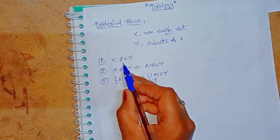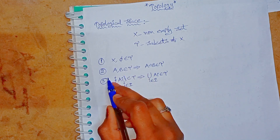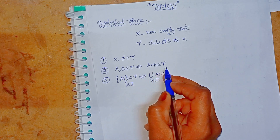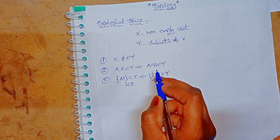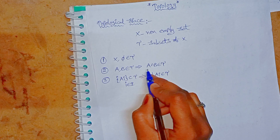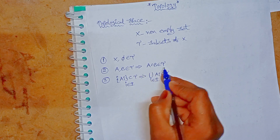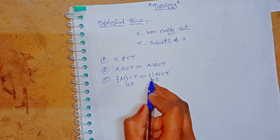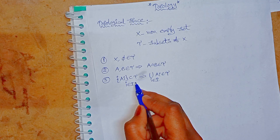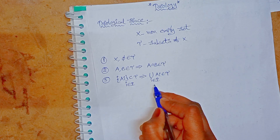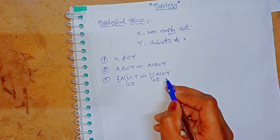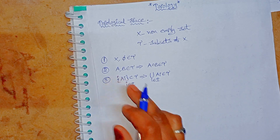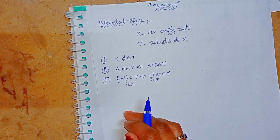To summarize the three conditions: first, X and ∅ belong to tau; second, for any two sets A and B in tau, their finite intersection is again a member of tau; third, for arbitrary subsets A_i in tau, the arbitrary union is again a member of tau. Now let us solve some problems.